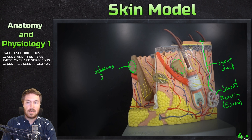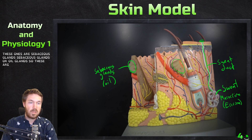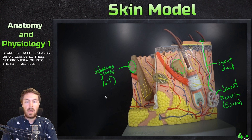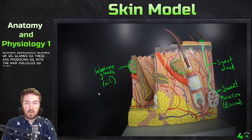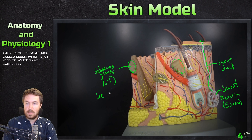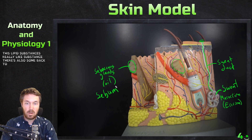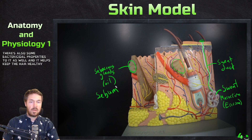Connected to the hair follicles are sebaceous glands — also called oil glands. These produce sebum, which is a lipid-based, oily substance. Sebum has bactericidal properties and helps keep the hair healthy.